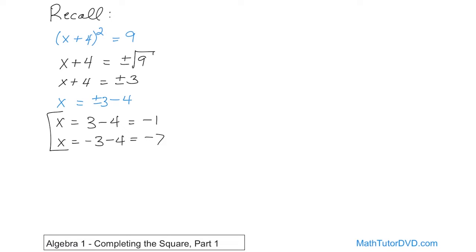A couple of things to talk about before we get into completing the square. This form — a perfect square on the left equal to a number on the right — is really, really nice because it's always solvable. Always. Here we have a 9, so the square root is 3, and it's even nicer. But even if this were 7, 2, or some weird fraction, you're still able to take the square root of both sides and always get the answer. So having a perfect square on the left with only a square term, and a number on the right, is what you're always striving for.